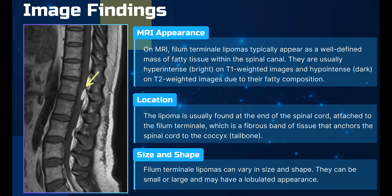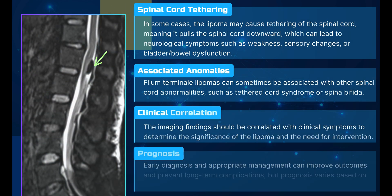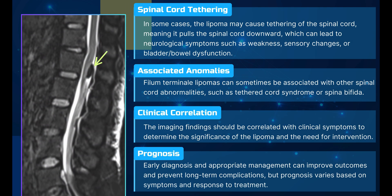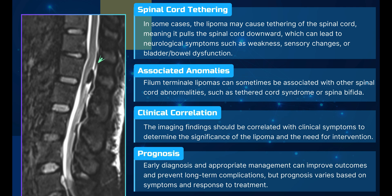A T1 and T2 bright lesion which is suppressed on fat saturation sequence should give the diagnosis. This is the fat saturation sequence — you can see the suppression. The lesion is dark on this sequence.